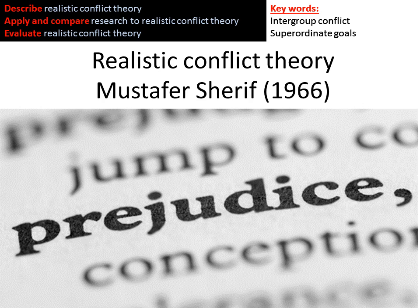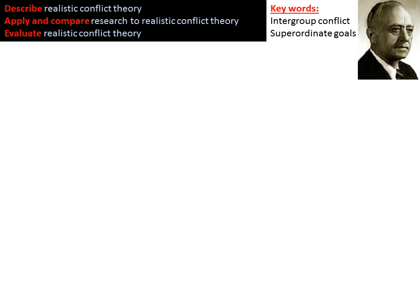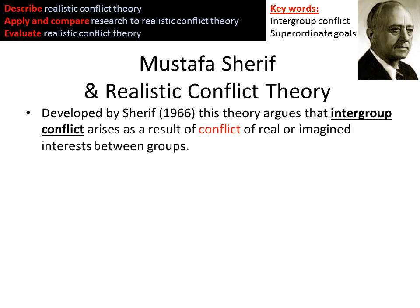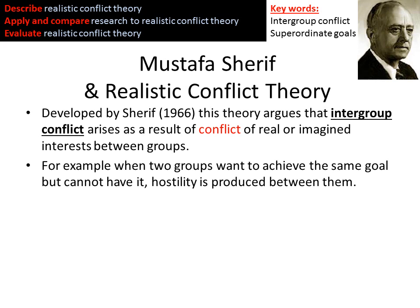In this video we're going to look at Realistic Conflict Theory, which is an alternative explanation for prejudice apart from Social Identity Theory. This was proposed by Sheriff in 1966 - you may know him from the Robber's Cave experiment, a key study in the social approach. Sheriff suggested that intergroup conflict or prejudice results as a consequence of conflict between groups. Whereas Social Identity Theory says prejudice occurs from the mere presence of groups, Realistic Conflict Theory suggests there must be some competition or conflict between groups for prejudice to arise.